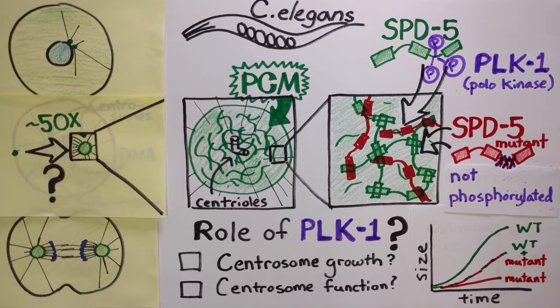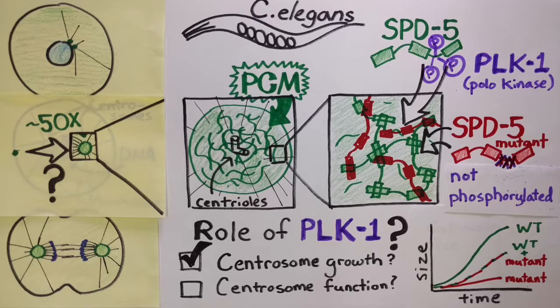This means that PLK-1 phosphorylation of SPD-5 controls the rate of centrosome growth, but not its maintenance or function.